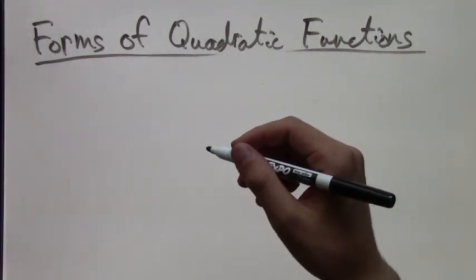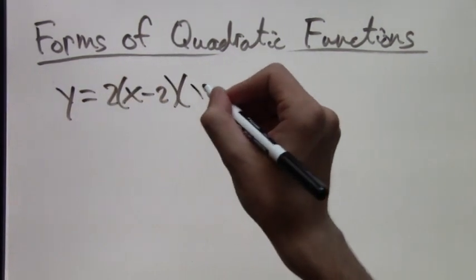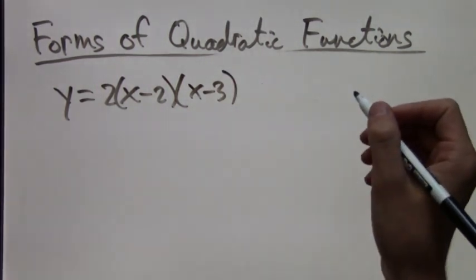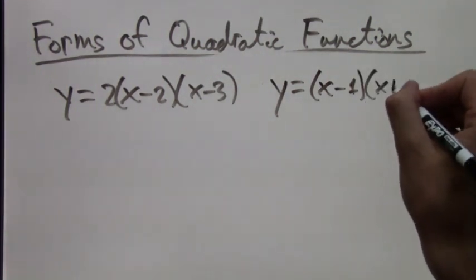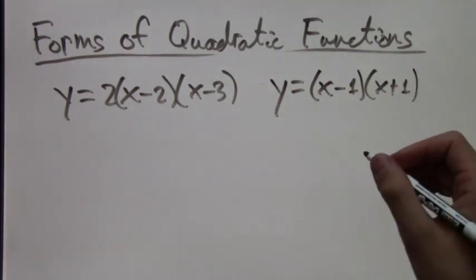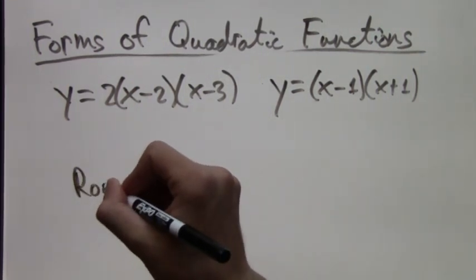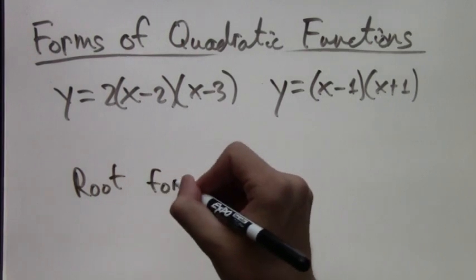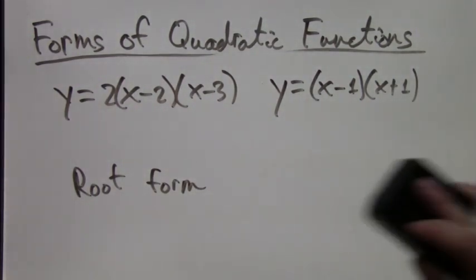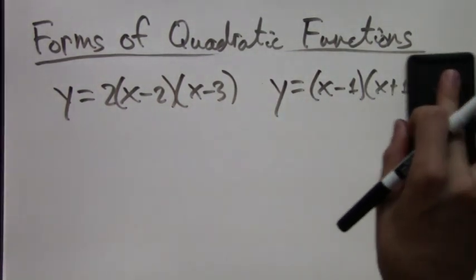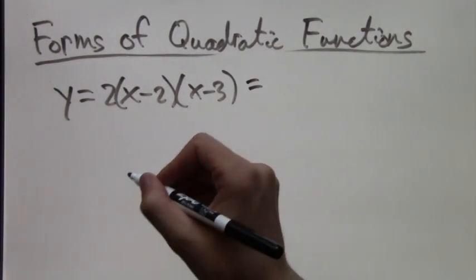Now let me show you a different form. y equals 2 times x minus 2 times x minus 3. This is called root form. Or we could have y equals x minus 1 times x plus 1. Notice that it is different from the standard form. We have x minus something times x minus something else, rather than some sort of x squared plus some sort of x plus something. But really this root form is pretty much the same as the standard form.